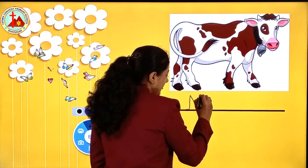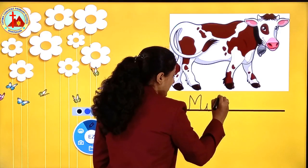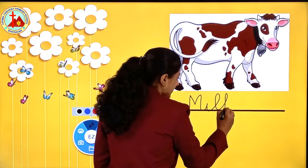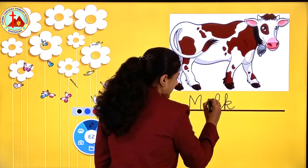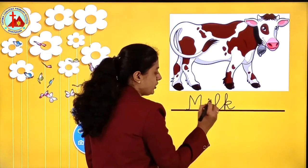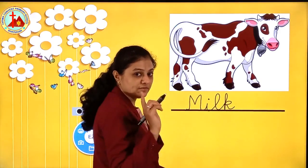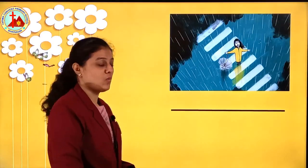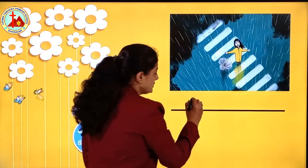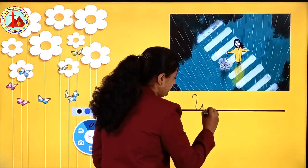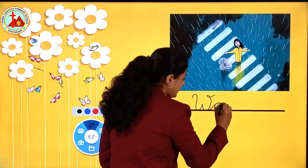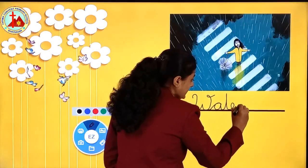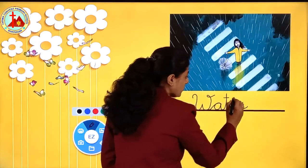M-I-L-K. And a dot on I — many of you forget this dot, never forget. Now this is a picture of rain. What does rain give us? Water. W capital, A-T-E-R. Water.